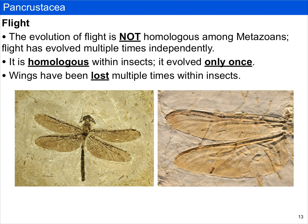Any discussion of insects should involve some exploration of flight. Remember that flight is not homologous among metazoans — it has evolved multiple times independently. Think of things like birds, bats, and pterosaurs; they have independently evolved flight, and if you were to look at their wings you would notice they are distinctly different from one another. Flight is homologous among insects, however, so it only evolved one time. That doesn't mean all insects can fly — there's an entire group that's not able to fly, so flight is not a synapomorphy for all insects. Keep in mind also that wings have been lost multiple times within insects, with examples of flightless flies and flightless lepidopterans.